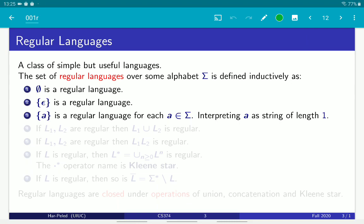Then for every letter in our alphabet, the language that contains only this letter—this is a string that has a single character which is this letter in the alphabet—we consider this set to be a regular language.